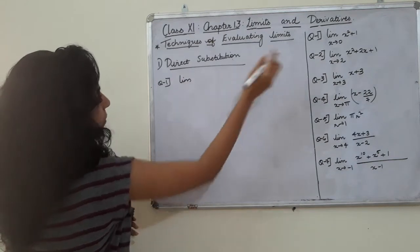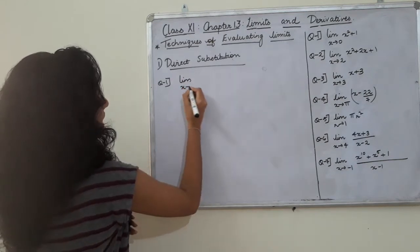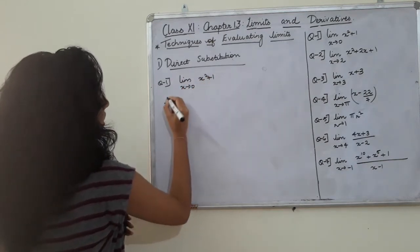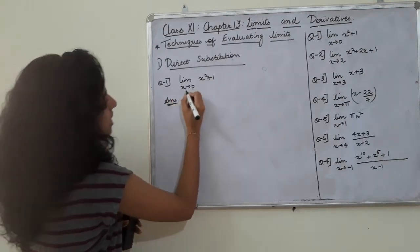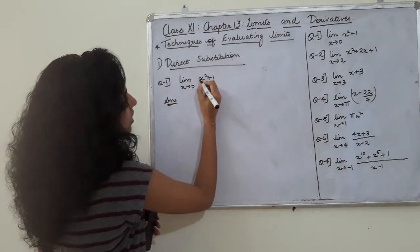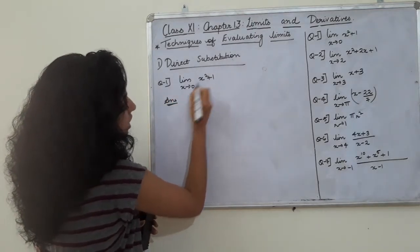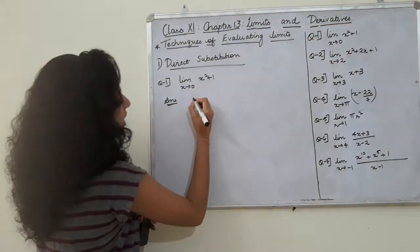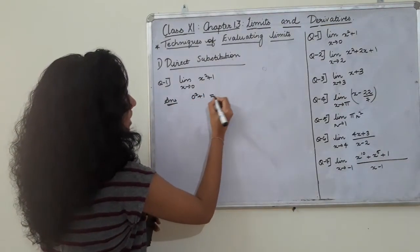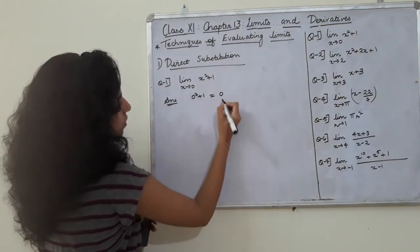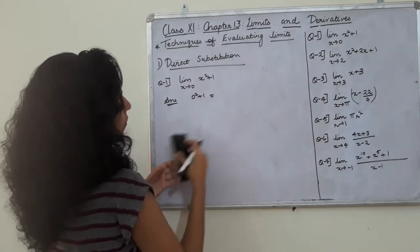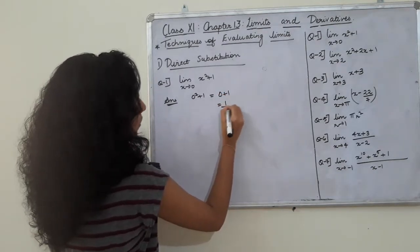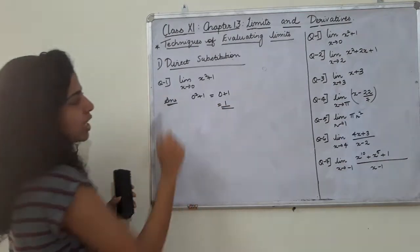Limit — x tends to 0 — of x squared plus 1. We substitute x = 0 directly: 0 squared plus 1 equals 0 plus 1, which equals 1. So the answer is 1.